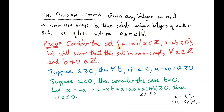To prove the lemma, we consider the set of values a minus xb, where x is an integer and a minus xb is a non-negative integer. So we're dealing with all non-negative integers of the form a minus xb. First, we will show that this set is non-empty for all integers a and non-zero integers b.